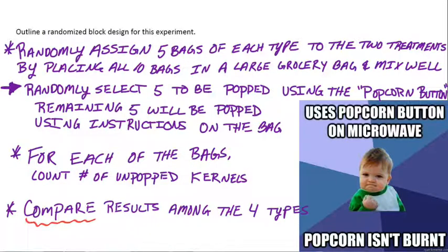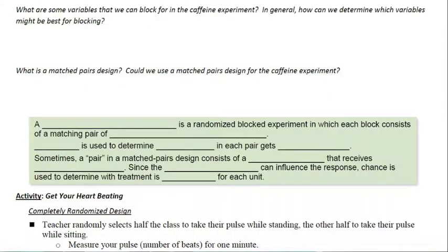So now let's refer back to that caffeine experiment. The next page says, what are some variables that we can block for in the caffeine experiment? In general, how can we determine which variable might be best for blocking? Okay, so there's a lot of different factors that would go into how caffeine might affect you. You could probably come up with multiple. I'm thinking, you know, maybe your age,